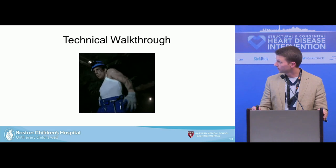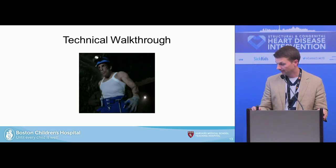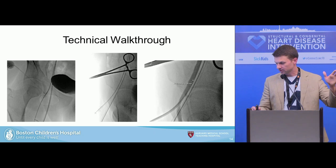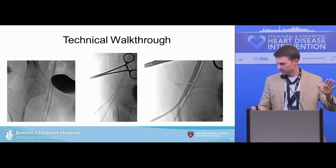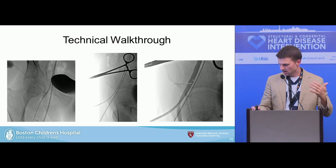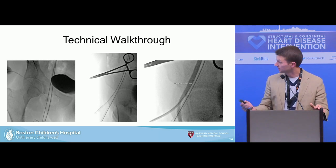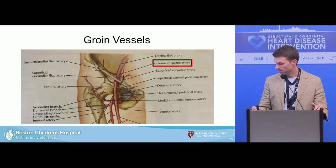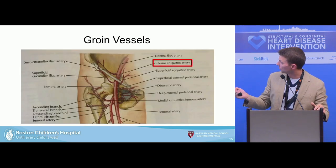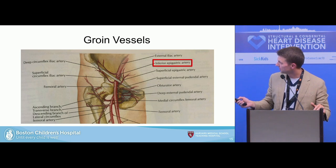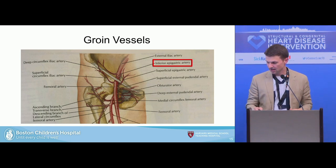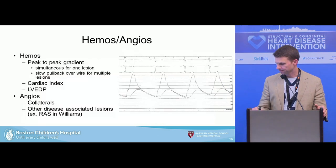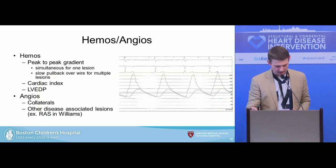We're going to do a technical walkthrough. Not all vessels can be perclosed, so we'll make sure it's at least five millimeters before we attempt pre-closure. The first artery above the inguinal ligament is the inferior epigastric artery — if you're seeing that as part of your access location, you know you're too high. Start your case with hemodynamics.